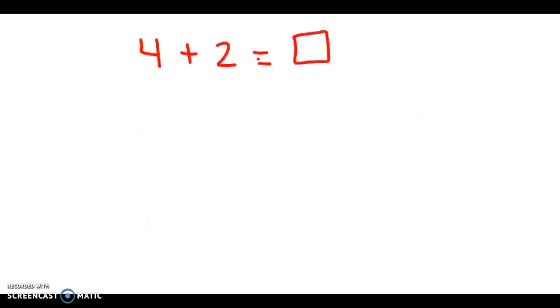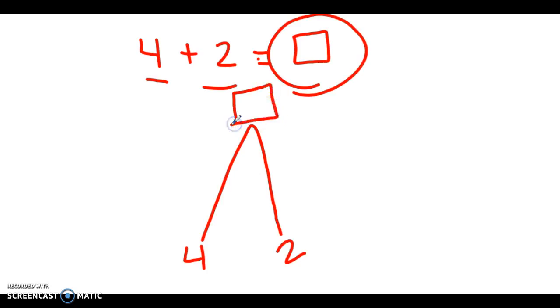Another type of problem that we worked on today was when they gave us an equation and we had to make a math mountain that matched. This equation 4 plus 2 equals blank would be put on a math mountain like this. 4 and 2 are being added together to find the total so those two numbers would be our add-ends and then we'd simply have to add them up to find our total of 6.